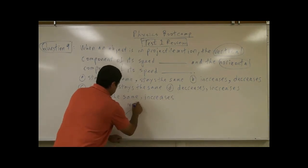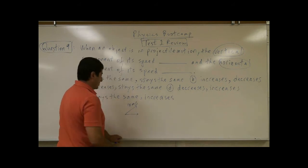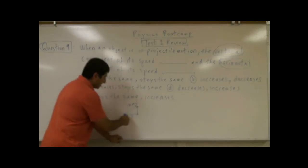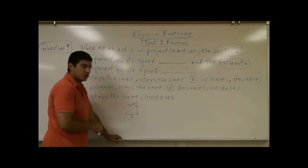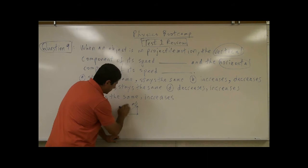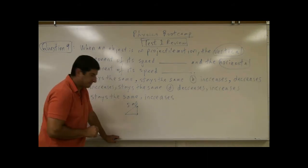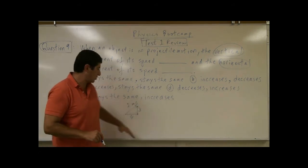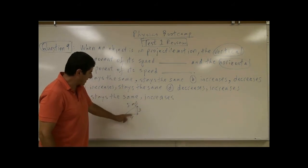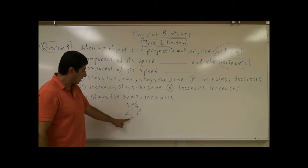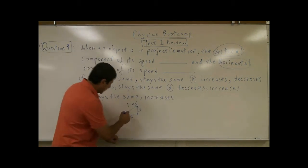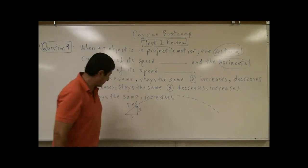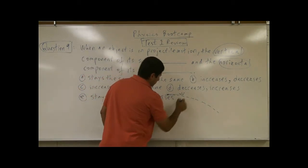Let's say you throw something at 5 meters per second and you can make a three-four-five triangle out of it, so the horizontal component will be four. As the object goes up and comes back down, the horizontal component will always equal four — when it goes to the top it's four, when it goes back down it's four.